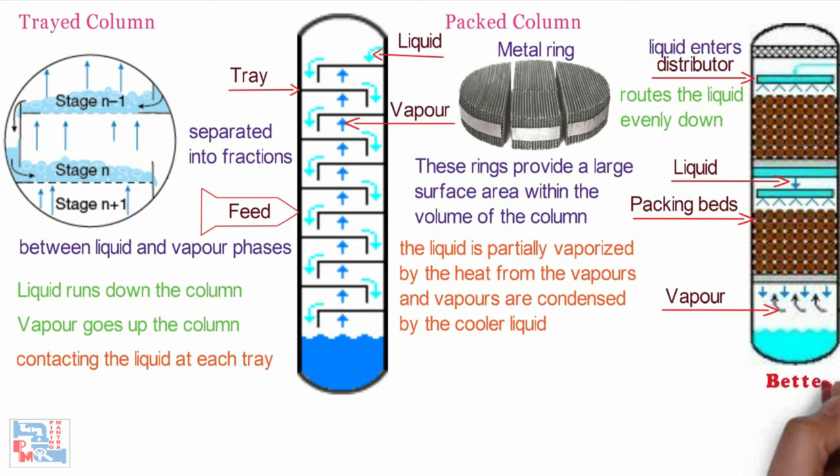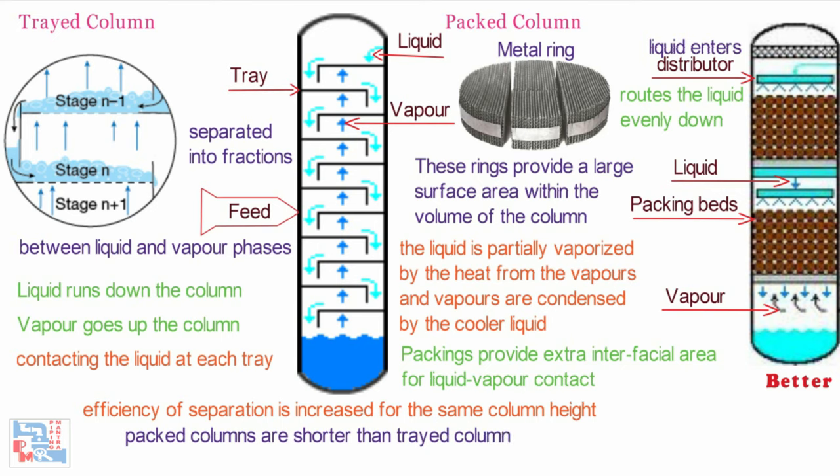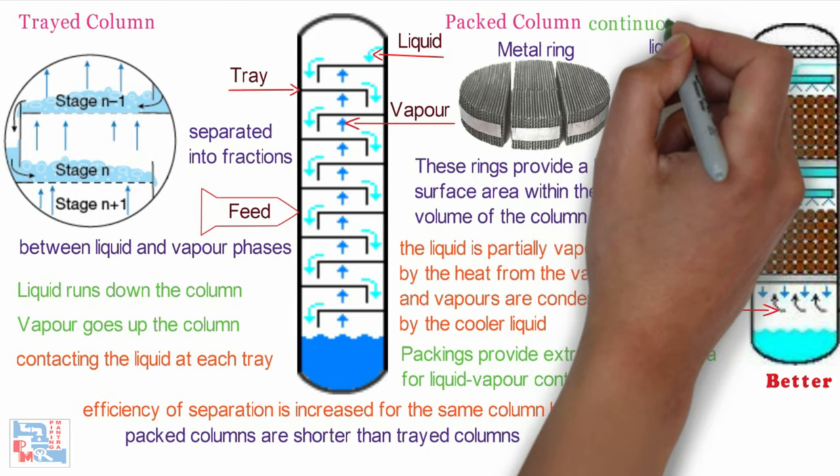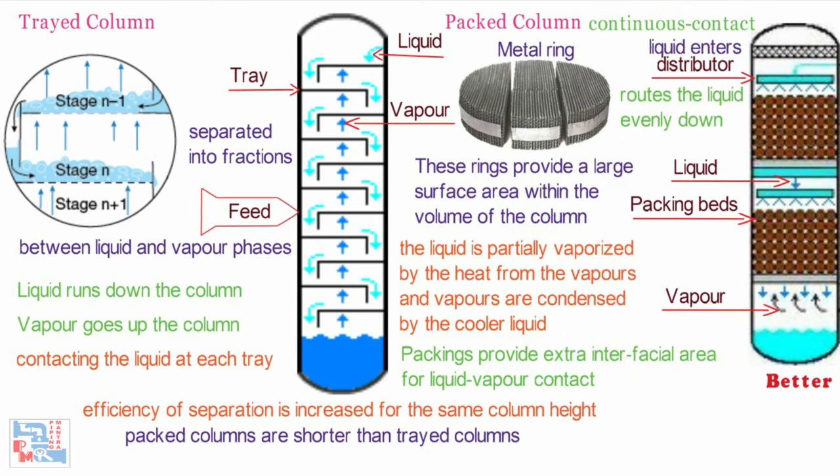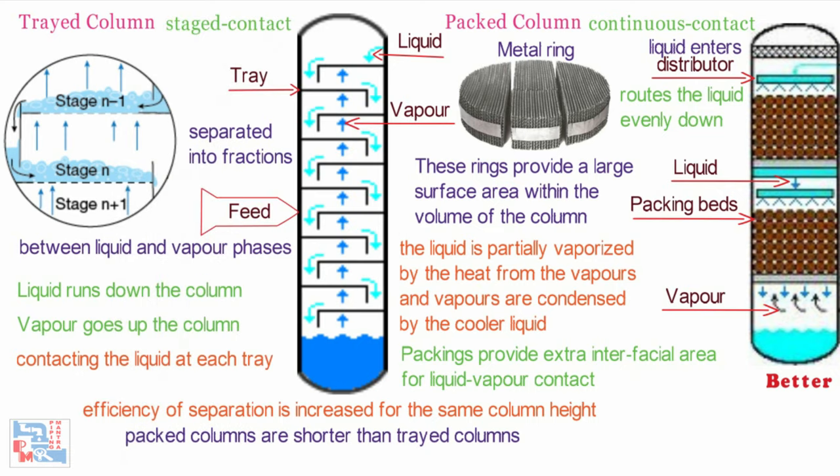Packing columns are better than tray columns as packings provide extra interfacial area for liquid vapor contact. Efficiency of separation is increased for the same column height. Packed columns are shorter than tray columns. Packed columns are called continuous contact columns, while tray columns are called staged contact columns, because of the manner in which vapor and liquid are contacted.